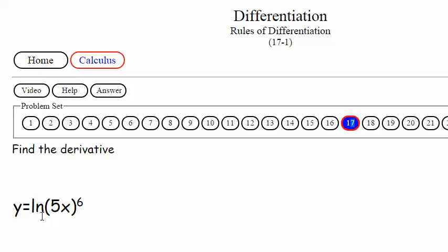We have y is equal to the natural log of 5 times x raised to the sixth power. I'm gonna take two seconds out and write that down. Y is equal to the natural log of 5x raised to the sixth power.